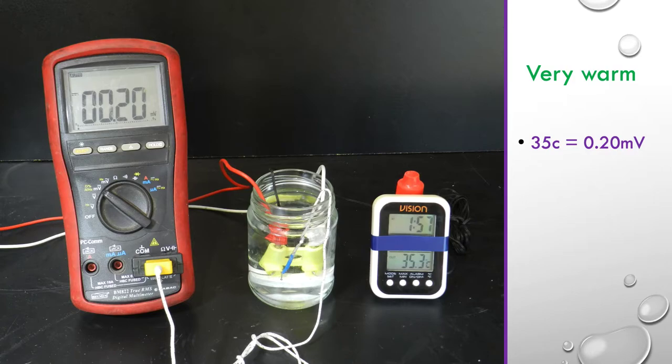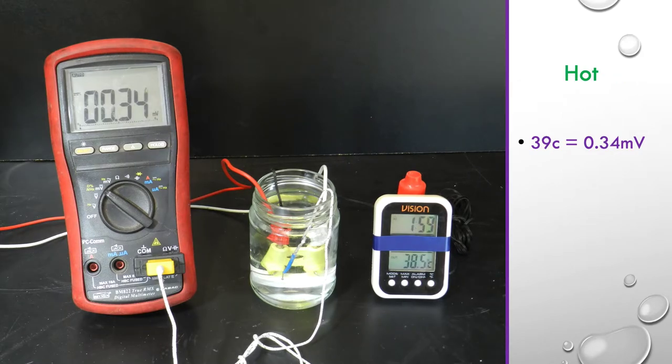So we're now up to 35 degrees C and we've come right up to 0.2 now, 0.2 of a millivolt. And we get up to 39 degrees C and we're up to, as you can see there, 0.34 millivolts.